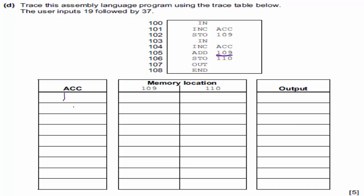The accumulator is not 1 — you need to read the directions. The directions say the user inputs 19 followed by 37. If you miss that, you'll get the whole question wrong. So the first IN puts 19 into the accumulator. Then INC gives us 20. Then STO 109 stores 20 into address 109. Currently nothing is there, but we overwrite it with 20.